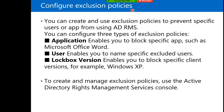You can also configure exclusion policies to prevent specific users or applications from using ADRMS. There are three types of exclusion policies: Applications — enables you to block a specific app such as Microsoft Office Word; Users — enables you to name specific excluded users; and Lockbox Versions — enables you to block specific client versions, for example Windows XP. To create and manage exclusion policies, use the Active Directory Rights Management Services console.